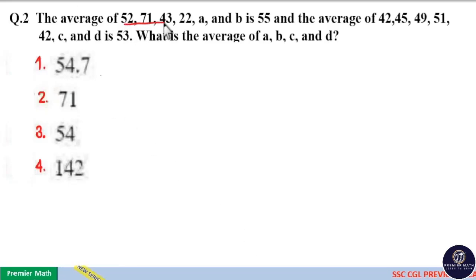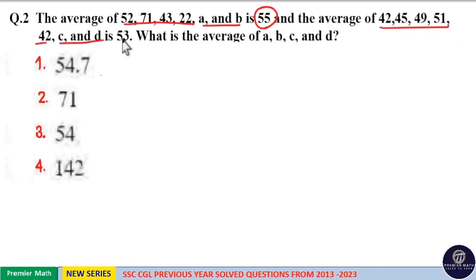The average of 52, 71, 43, 22, a, and b is 55. The average of 42, 45, 49, 51, 42, c, and d is 53. What is the average of a, b, c, and d?